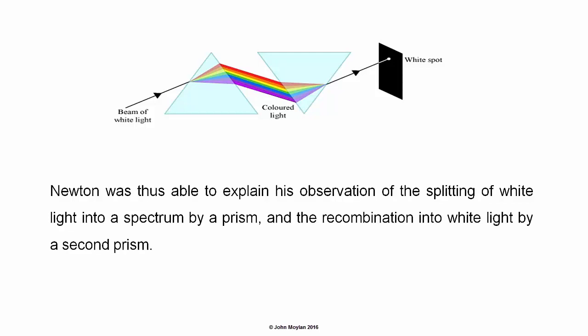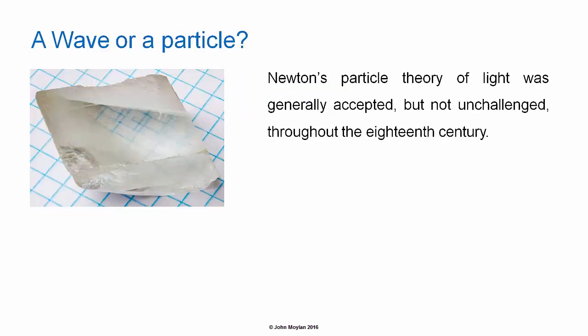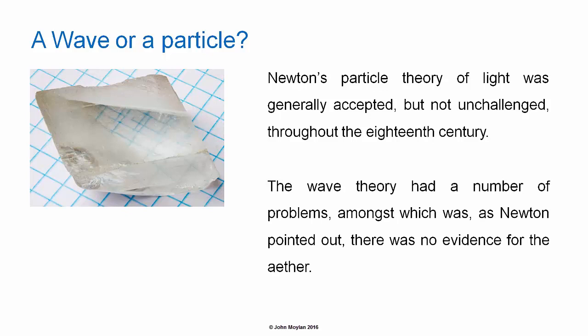Using this theory, Newton was able to explain his observations of the splitting of white light into a spectrum by a prism, and the recombination of white light by a second prism. Newton's Particle Theory of Light was generally accepted, but not unchallenged, throughout the 18th century.